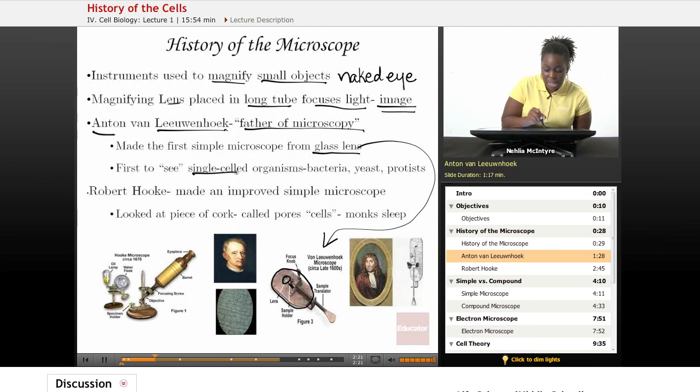he was able to see single-celled organisms or unicellular organisms such as bacteria, yeast, and protists. And he actually noticed that they were living things, and he called them animalcules,